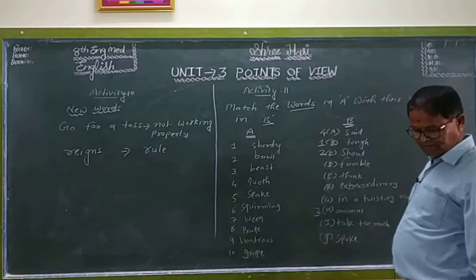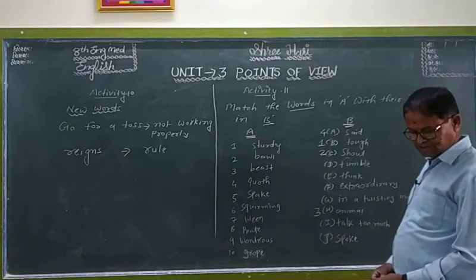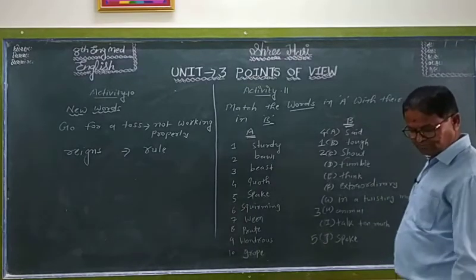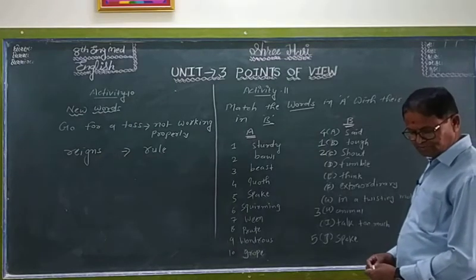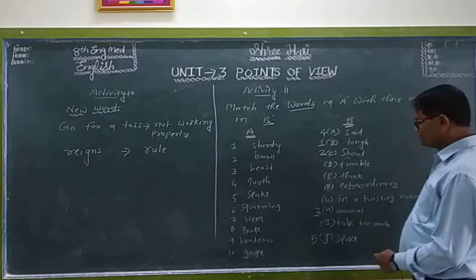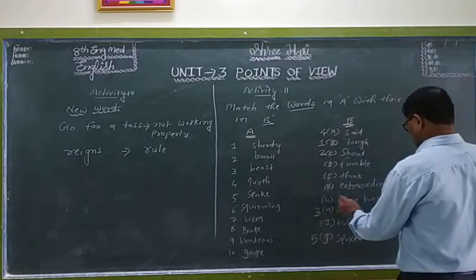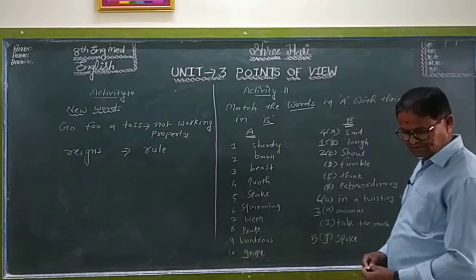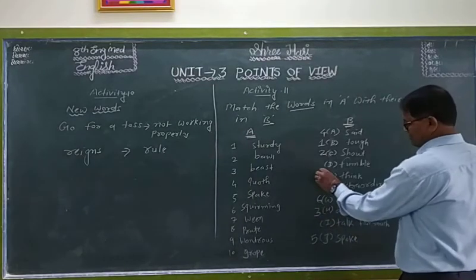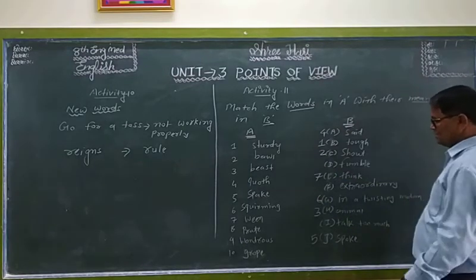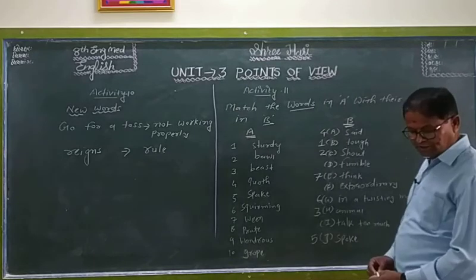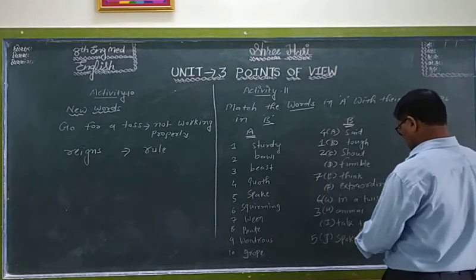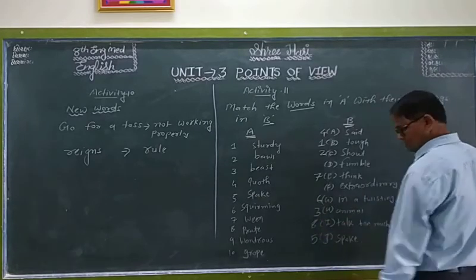In the poem, number five is 'speck' — it is a pure English word. Number six is 'screaming.' You can tell me which motion — a twisting motion. Number seven is 'vim' — vim means think, it means think. And number eight is 'prat' — prat means talk too much.